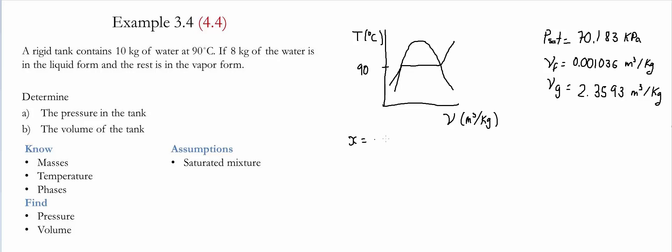The quality could be found simply by doing the ratio of the mass of the vapor divided by the total mass of the system. In this case the mass of vapor is equal to 2 kilograms and the total is equal to 10 kilograms. Therefore the quality for this particular case is equal to 0.2.